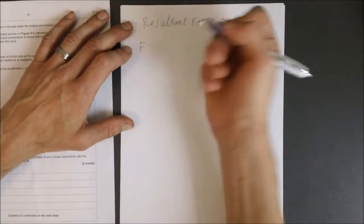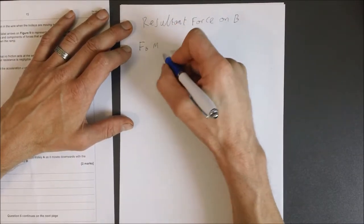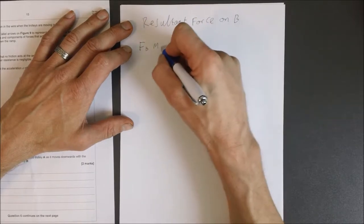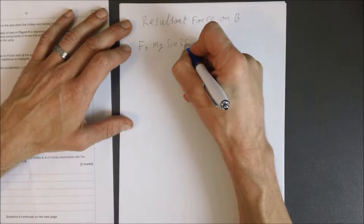Now, what we do here is we know that, let's just put down first of all that FB, the force on B equals big M, in this case here, the mass of the trolley, G, sine 35.